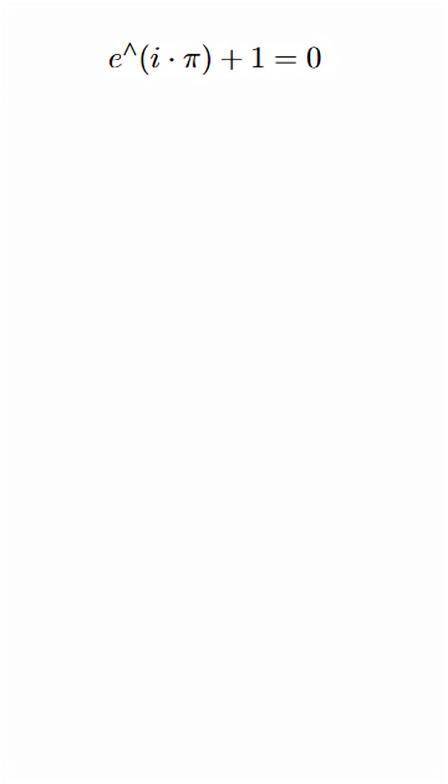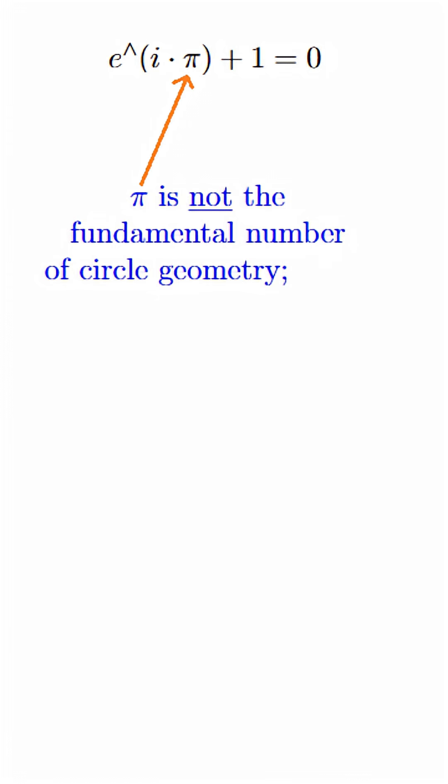Although there might be a number of issues that one could raise with this, really the whole edifice crumbles when you realize that pi is not the fundamental number of circle geometry, 2pi is. It's purely because of human historical reasons that we give a name to half of 2pi instead of 2pi itself.